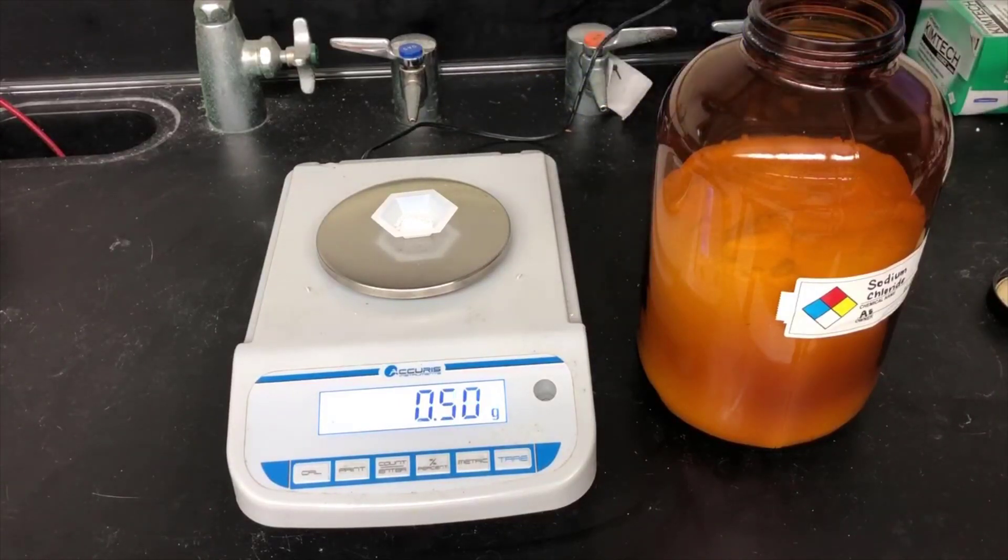You don't need to weigh out 0.50 grams of sodium chloride exactly. Just get as close as you can.